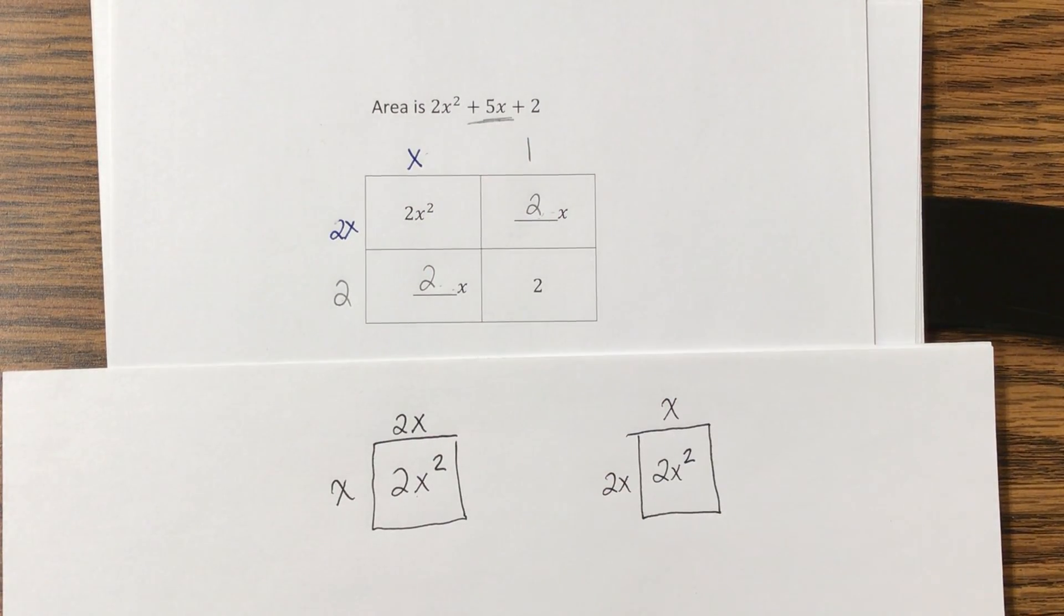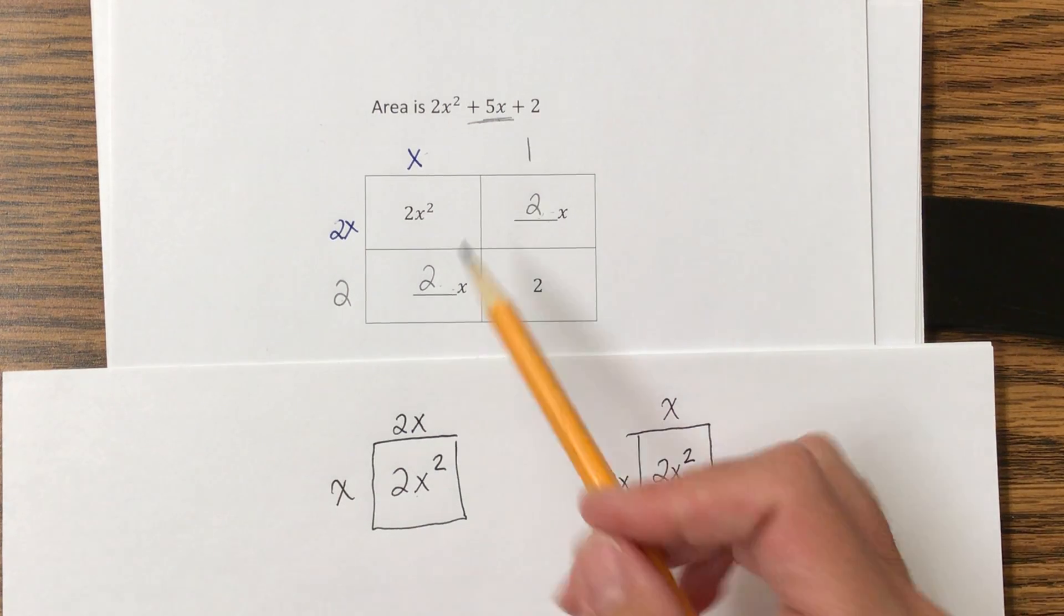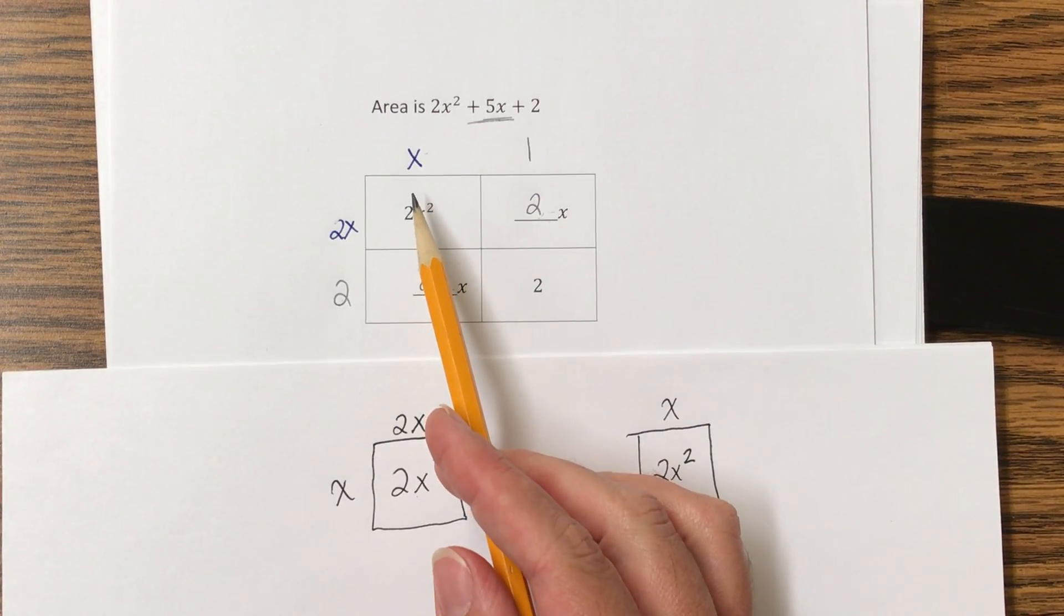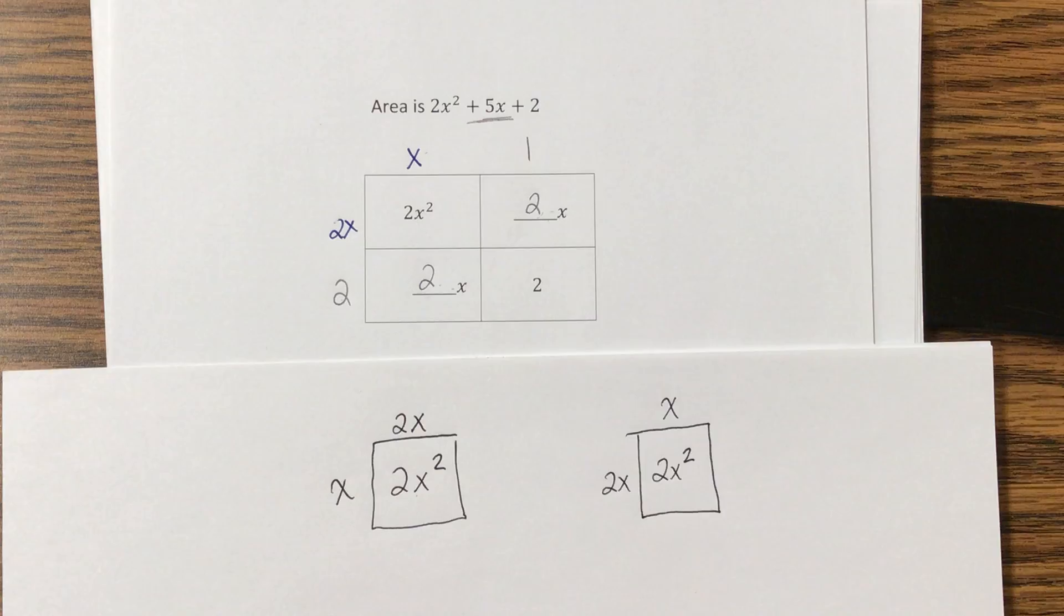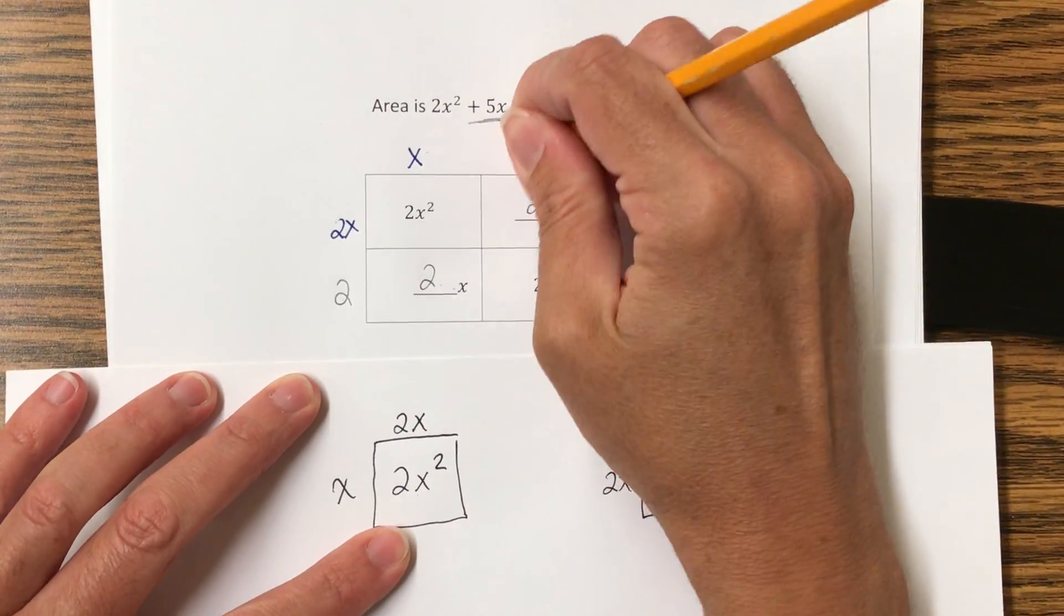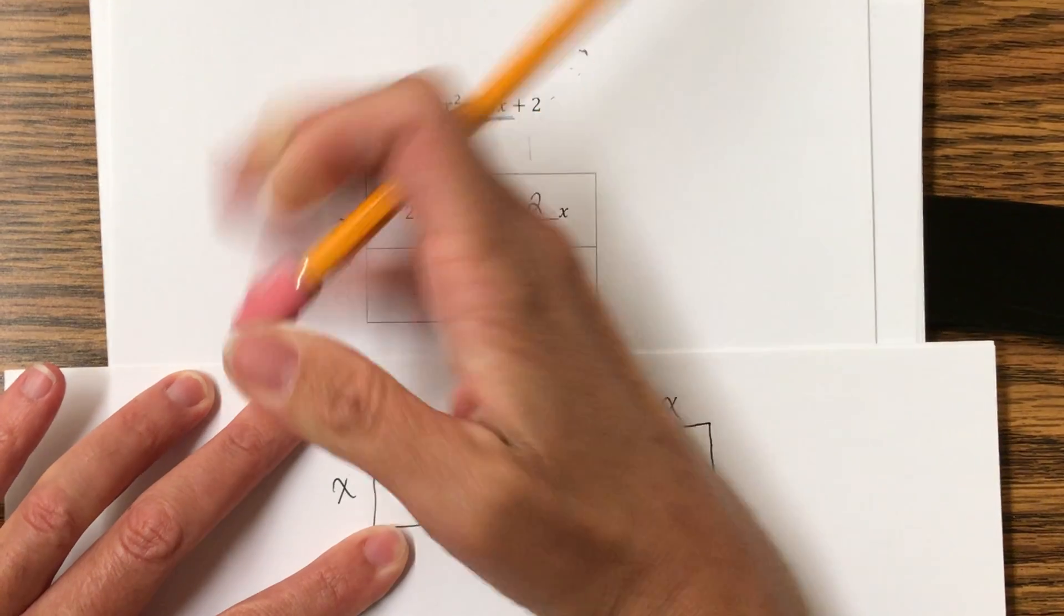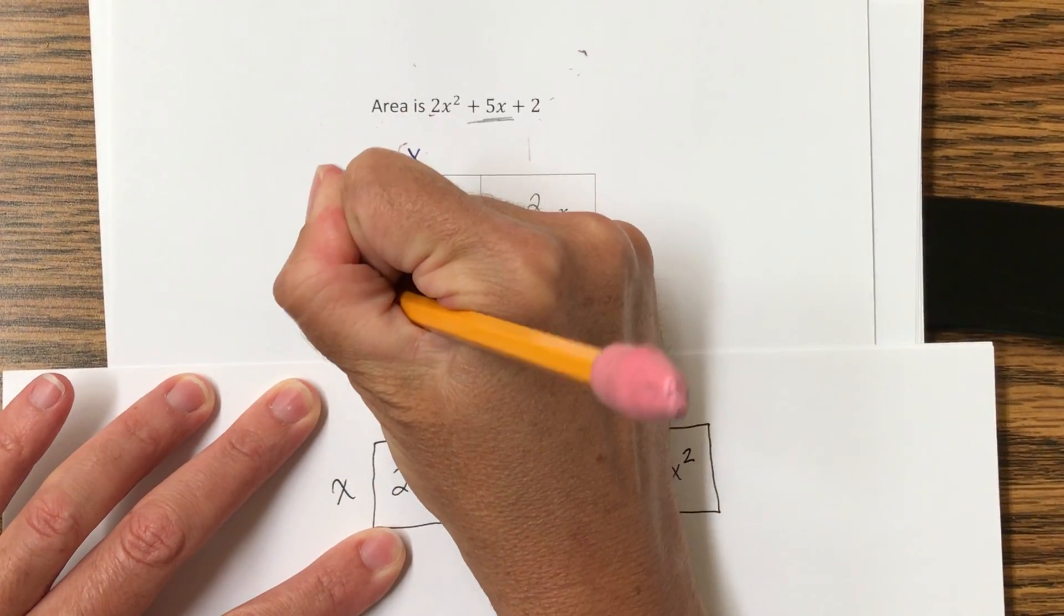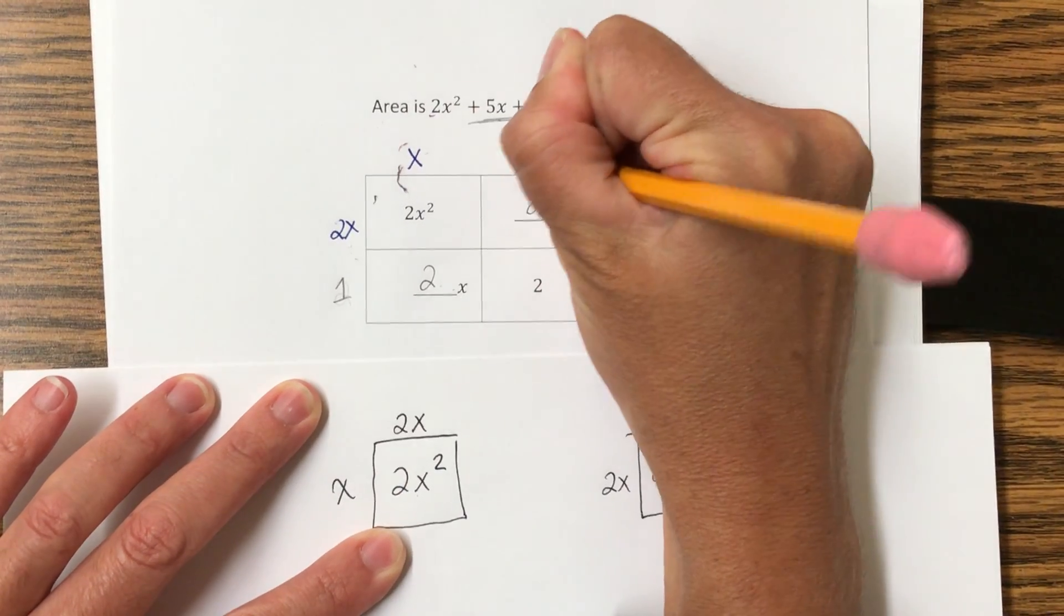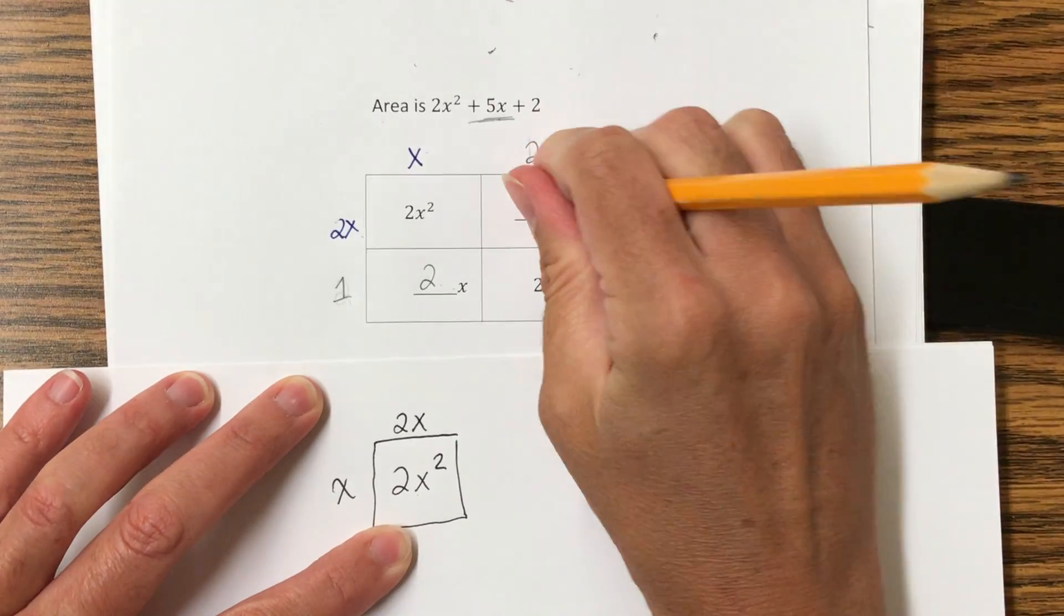So what if I maybe flip-flop some things around? Let's keep the 2x and the x where we have it. What if I switch my 1 and my 2? Let's put the 1 here and let's put the 2 here, and so now let's see what happens in the middle.